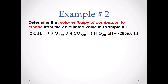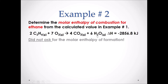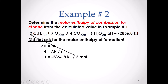Example 2: Determine the molar enthalpy of combustion of ethane from the calculated value in Example 1. We use ΔH = nH. Taking the ΔH value from the chemical equation and dividing it by the 2 moles in front of ethane gives us the molar enthalpy of combustion of ethane: negative 1428.4 kJ/mol.